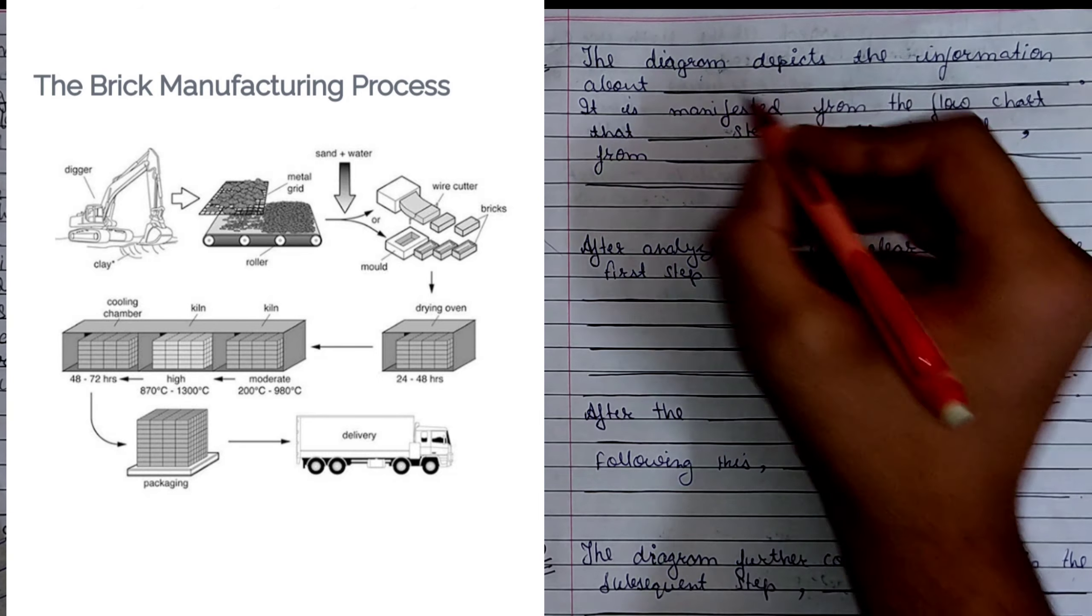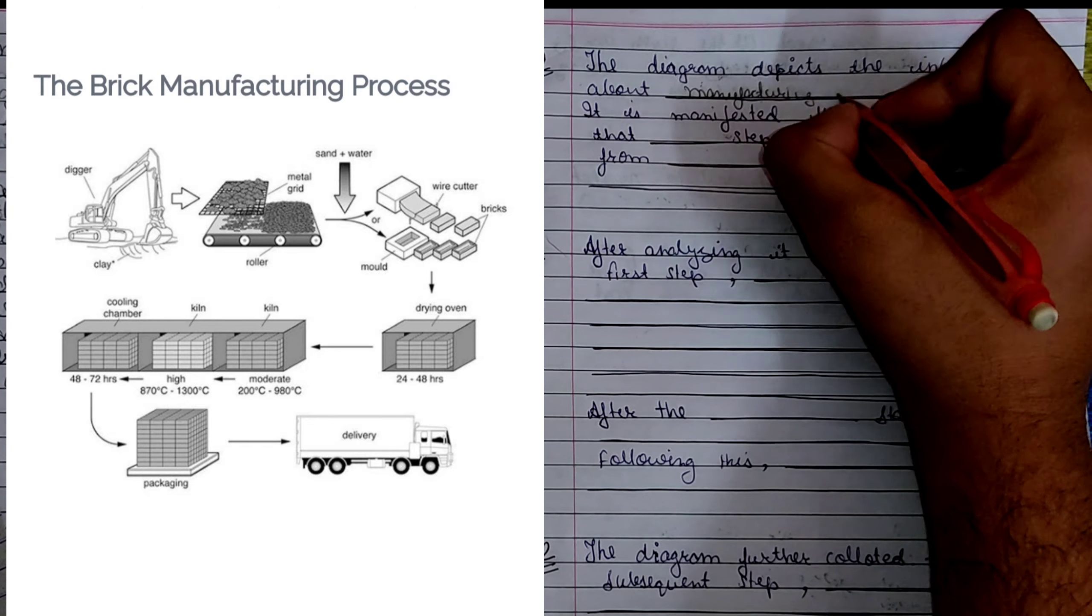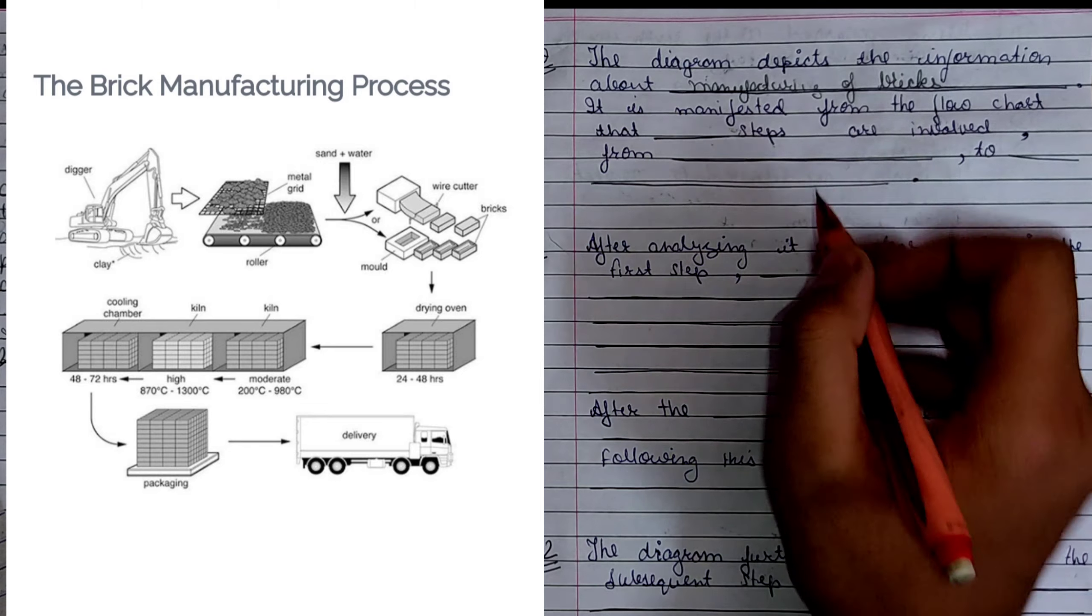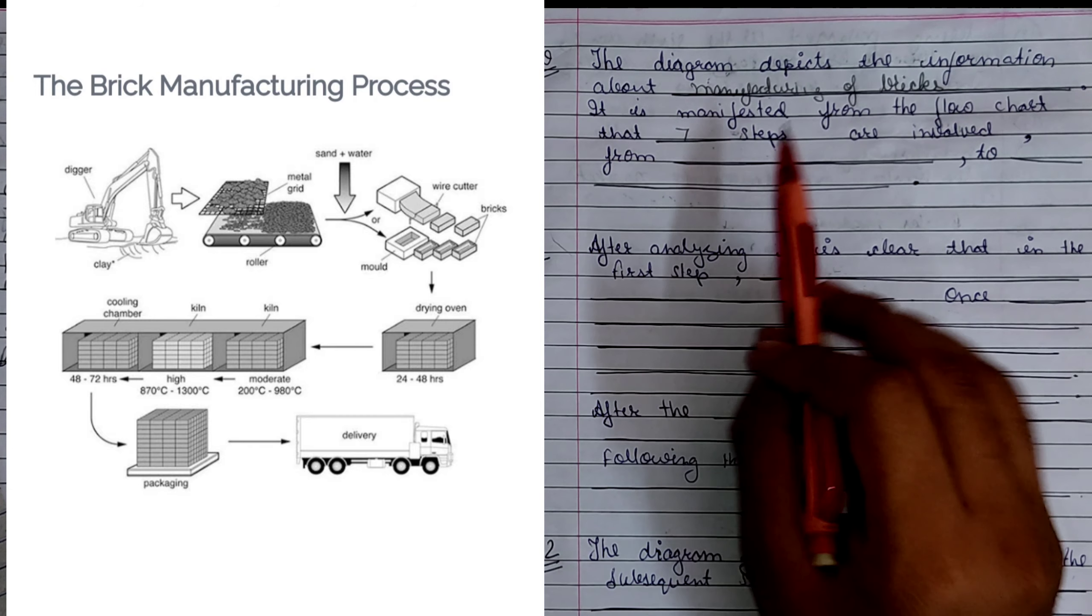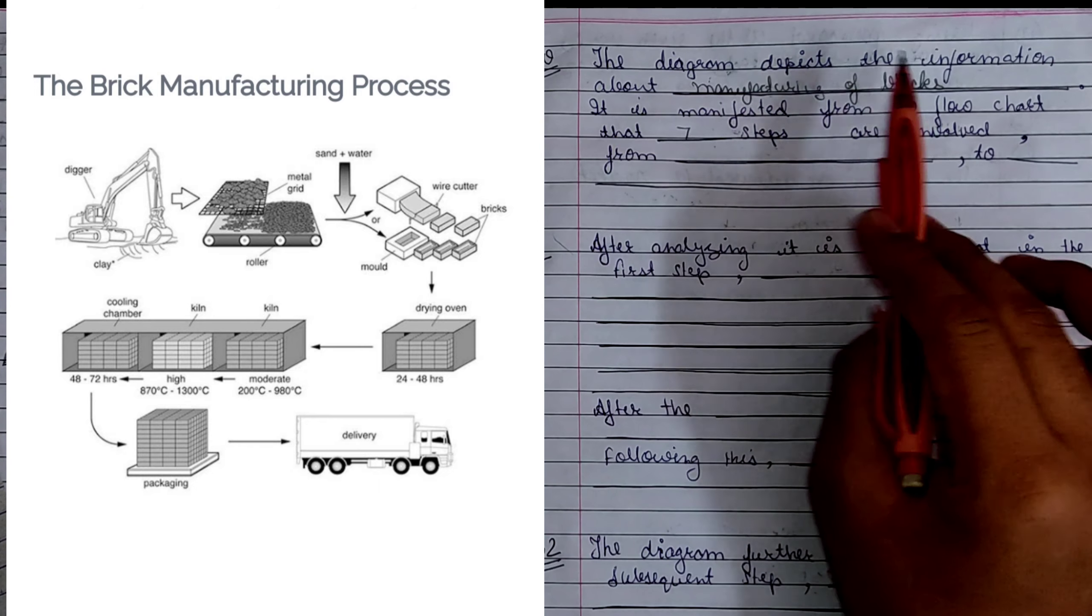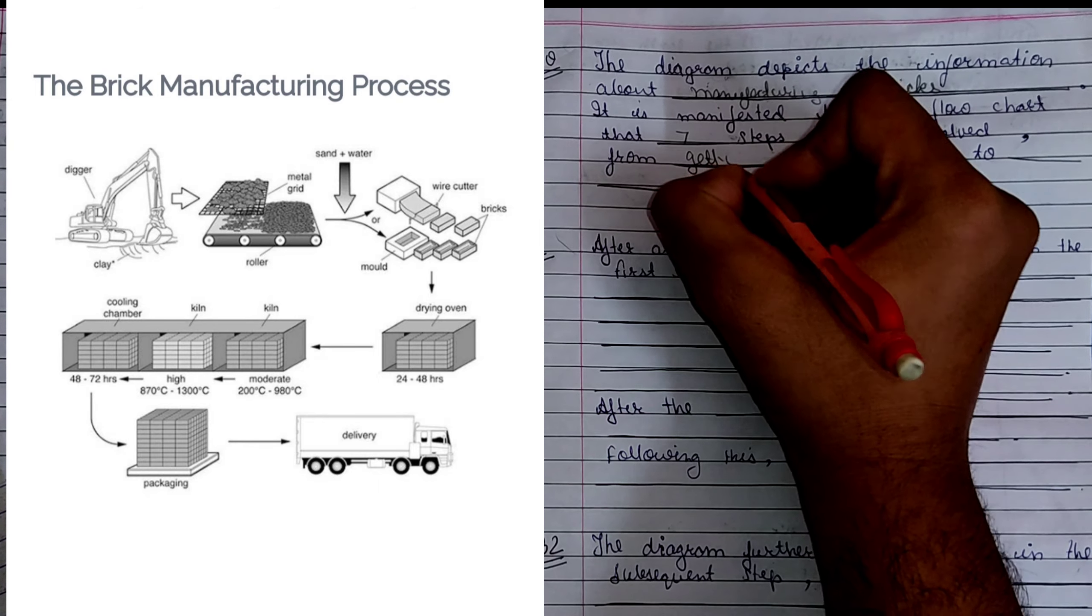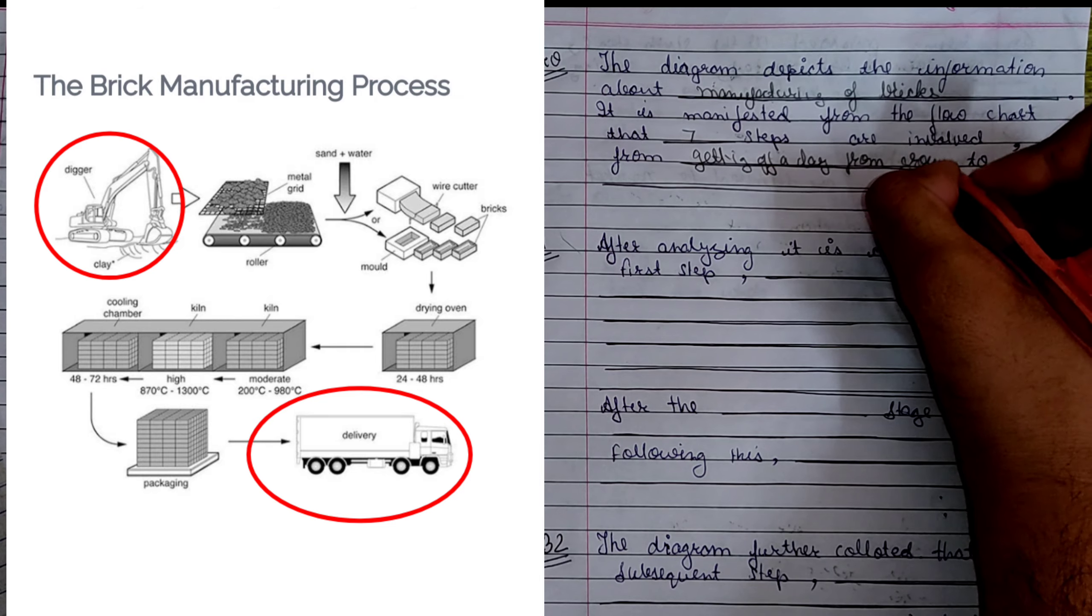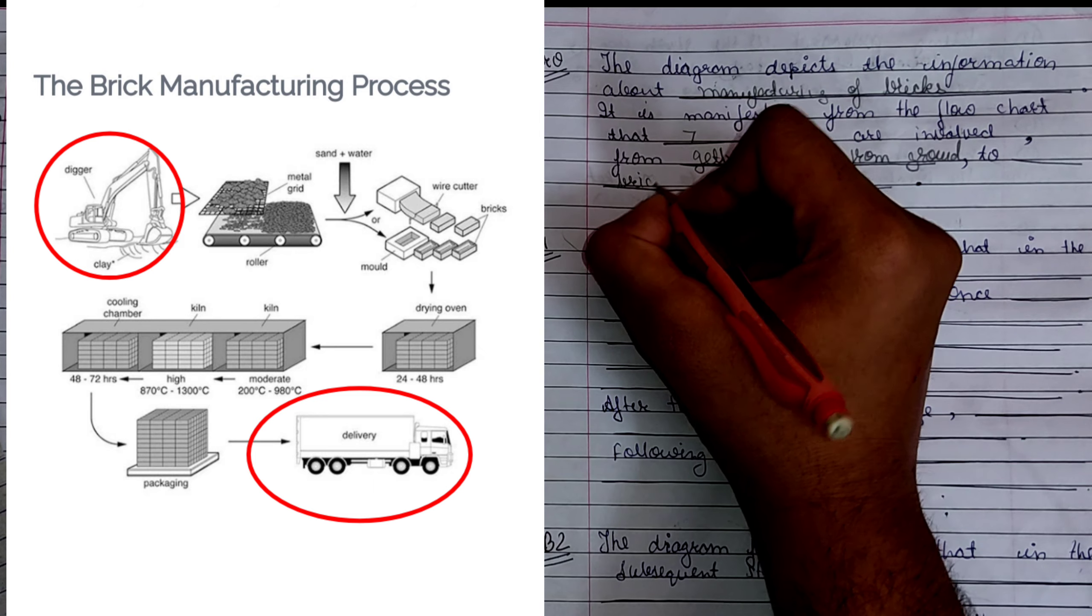The diagram depicts the information about manufacturing of bricks. It is manifested from the flowchart that 7 steps are involved from getting off a clay from ground to bricks delivery to customers.